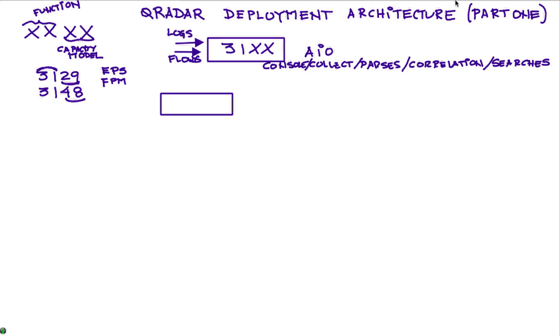Well it's very easy. What you can do is you can get an appliance, the 16xx. The 16 denotes the function of what is called an event processor. You connect it in here and what you do is that you take all these functions and you move them away from the 31xx and leave it only working as a console and you move those things into the 16xx.